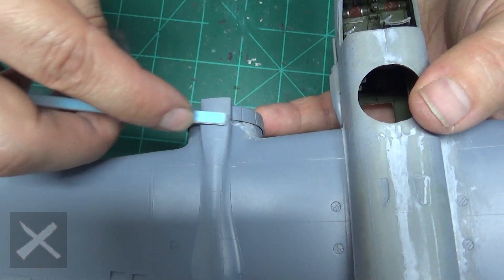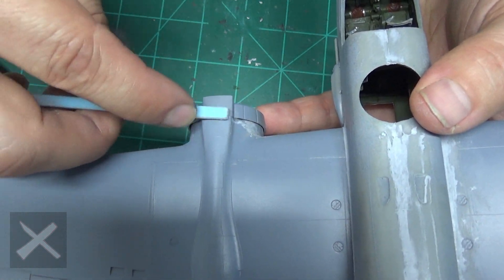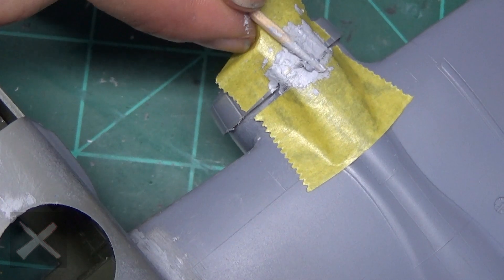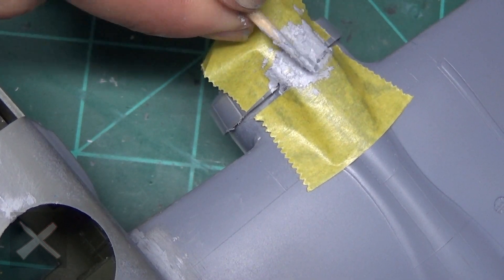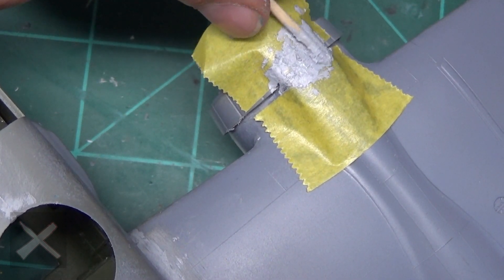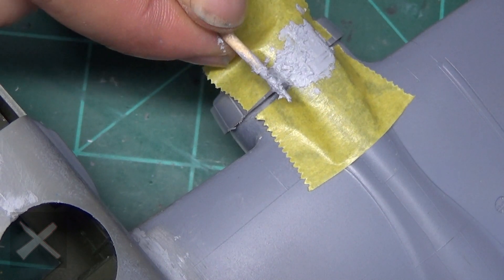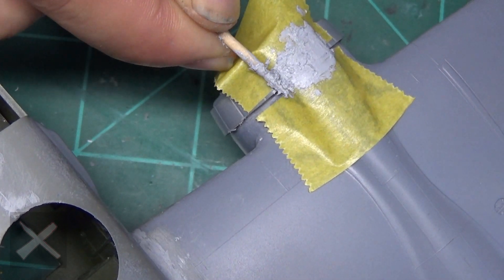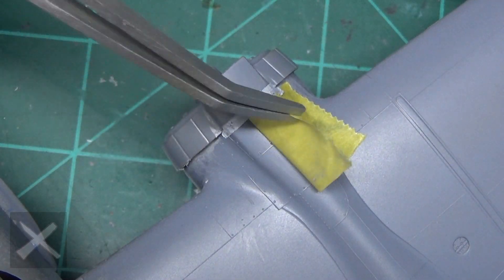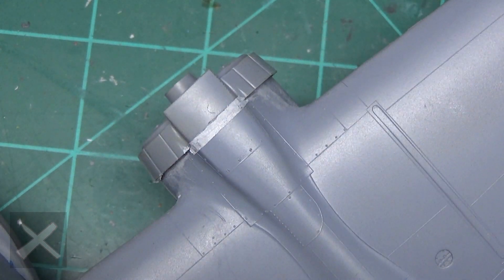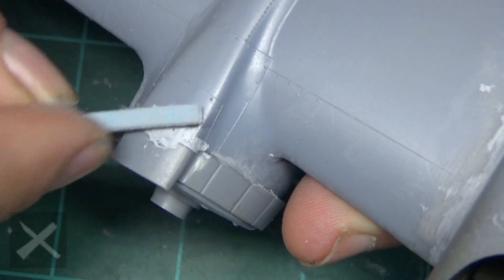We need to sand this down a little bit, make it a little even. Put some putty in there, just like this. Let that dry, sand it, fill it, sand it, however which way you want to do. It's kind of a combination of both, and you see how good that looks once it's done.